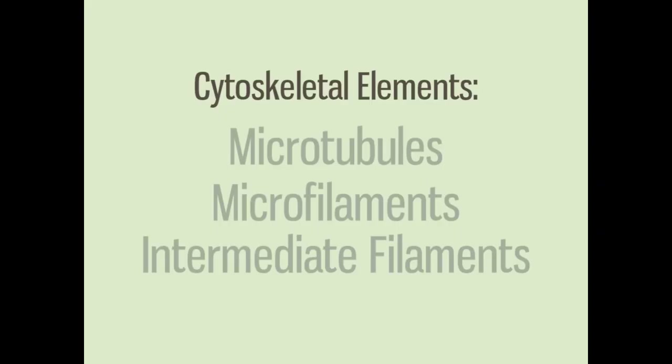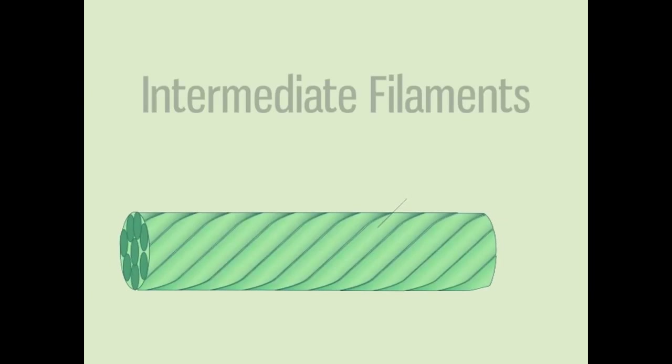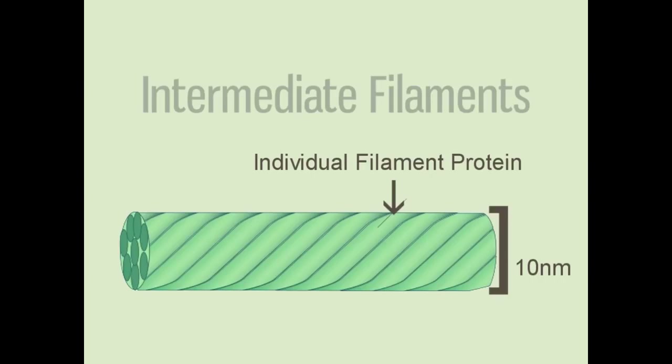The last group of cytoskeletal elements are called intermediate filaments. Unlike the others, they are not defined by their composition of a single monomer, because there are many kinds of intermediate filament proteins. Intermediate filaments are defined by their size, which is, as you might guess, intermediate. The average diameter of intermediate filaments is 10 nm, but that varies based on what type of protein they are composed of. Intermediate filaments also contribute to maintaining cell shape, but they have their own unique function as well. They are less dynamic than the other cytoskeletal elements, changing shape less quickly and less often, and providing more stability for the cell.